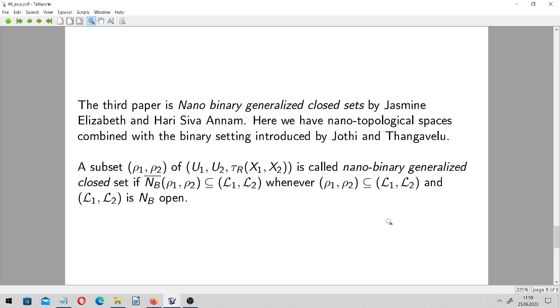So, as for the third paper, in this issue of Asia Mathematica, it is Nano-Binary Generalized Closet Sets by Jasmine Elizabeth and Hari Shiva Annan. Here we have nano-topological spaces, again, but combined with this binary setting that we know that it was introduced by Juti and Tangavell. Later, it was expanded to n-ary topological spaces. Both binary and n-ary spaces were presented on my channel a year or two ago.